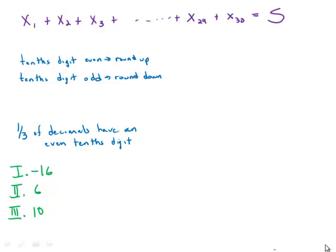So let's think about this a little bit. If we have a decimal with an even tenth digit, well that could be as small as 1.00001. That would get rounded up to 2.